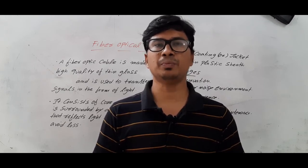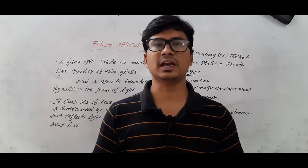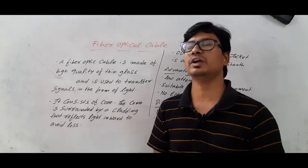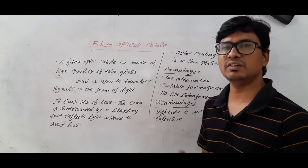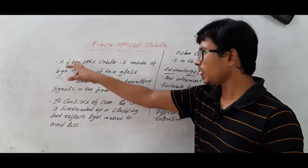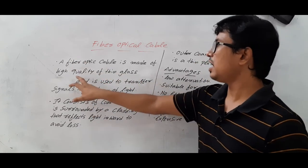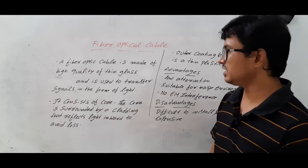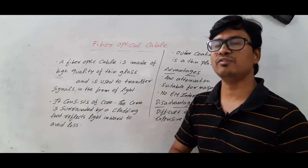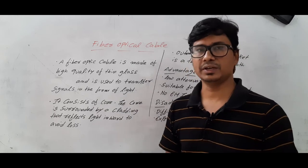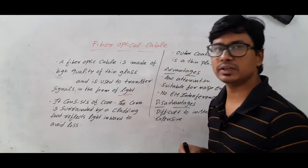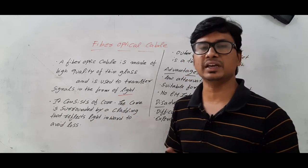In this video I want to discuss about fiber optical cables, which come in the category of guided transmission medium. A fiber optical cable is made of high quality thin glass and is used to transfer signals in the form of light. Because data is transferred as light, the transmission speed is very high as compared to twisted pair cables and coaxial cables.